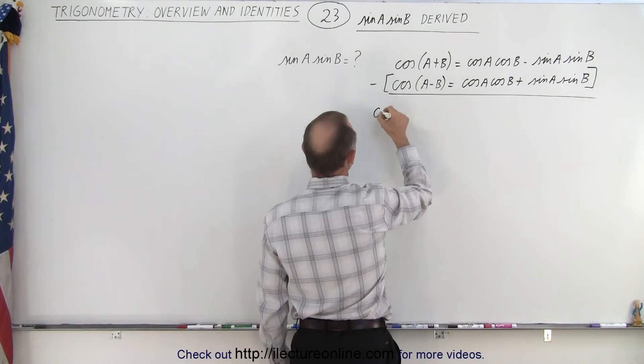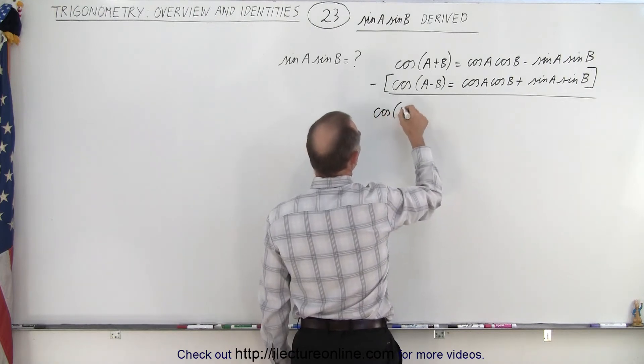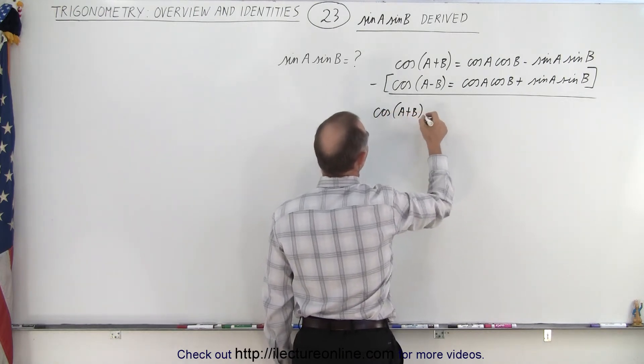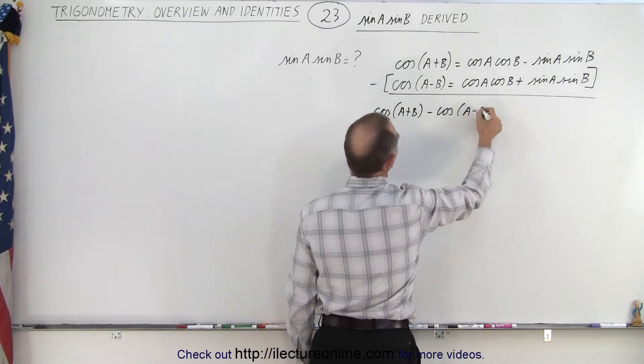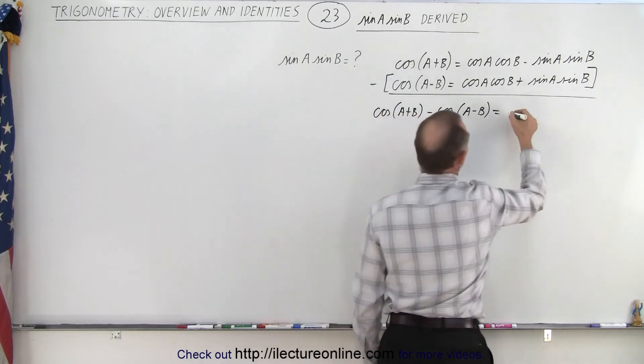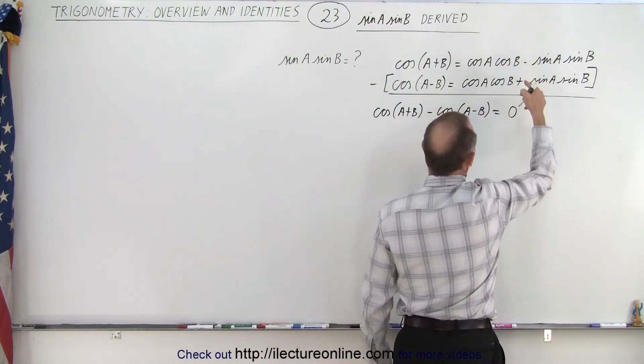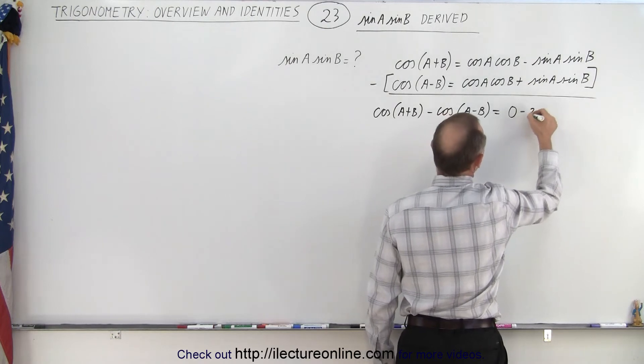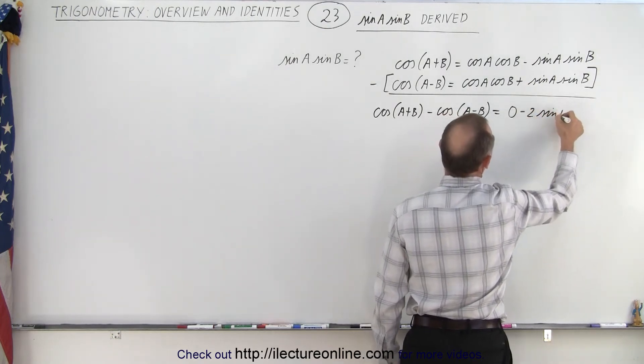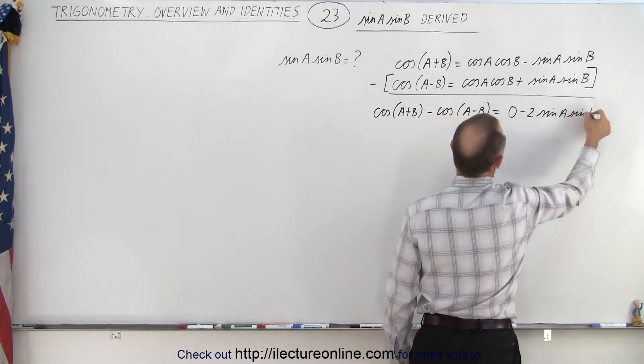So here we end up with cosine of a plus b minus cosine of a minus b, and that equals, or I should say, the cosine terms subtract to zero, and then we get minus two times sine of a times sine of b.